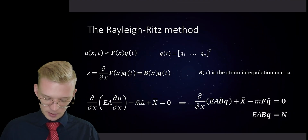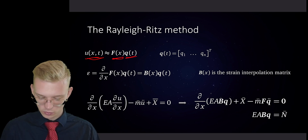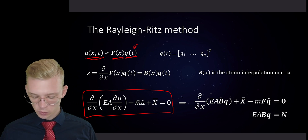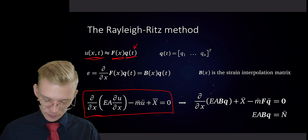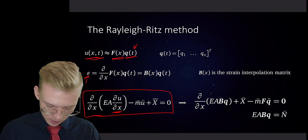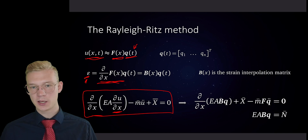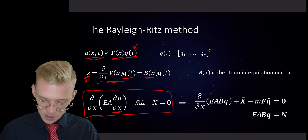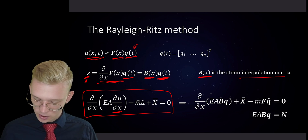From that, we can say that our displacements are our time functions and our amplitudes — q as a function of t. Because we know the differential equation of our system, we need the derivative in space, so the strain is a function of time and space. We derive our space function with x and if we derive our time functions with x we get nothing, so this is just a constant, and we will get the B matrix times q, where B is our strain interpolation matrix.